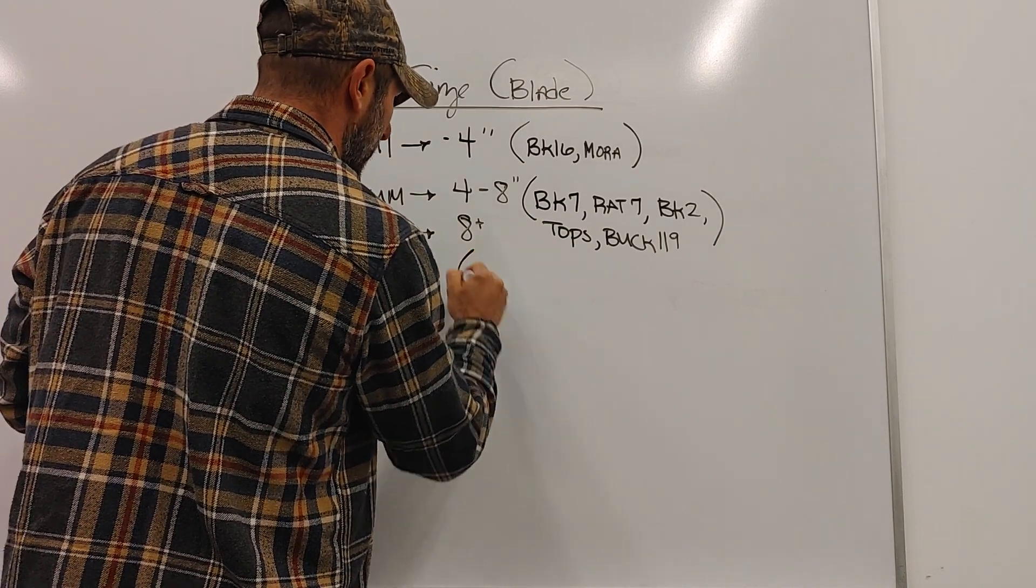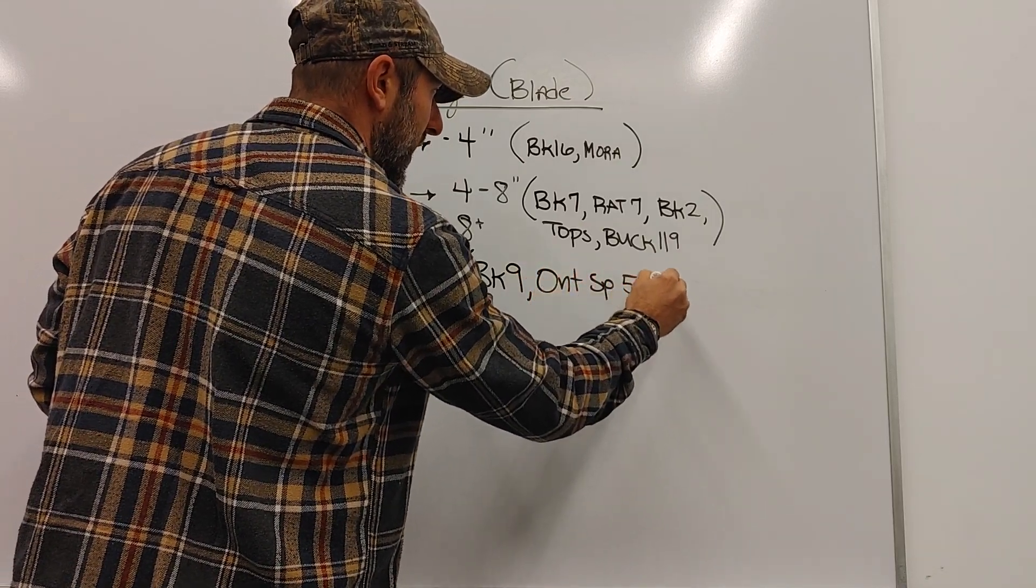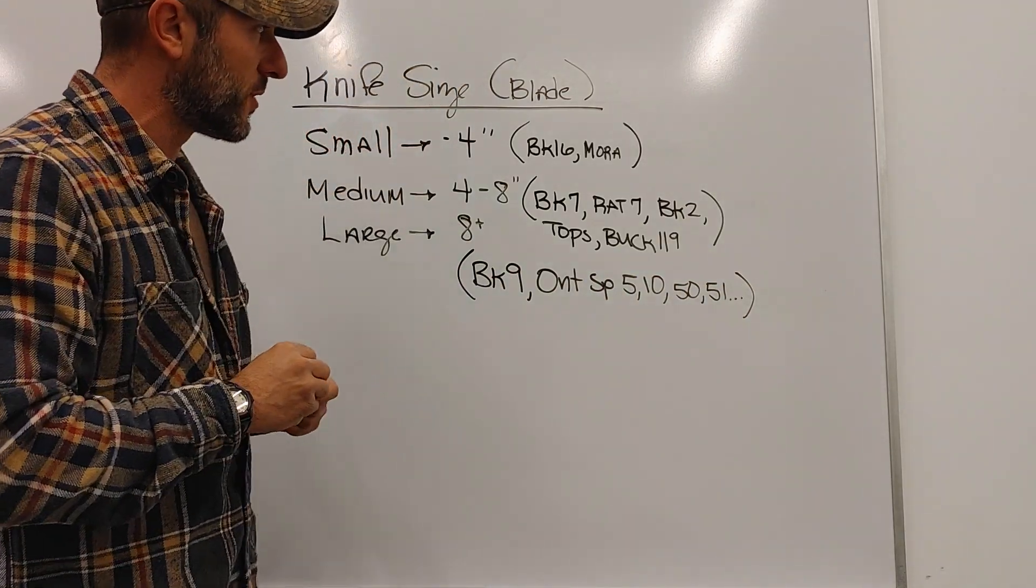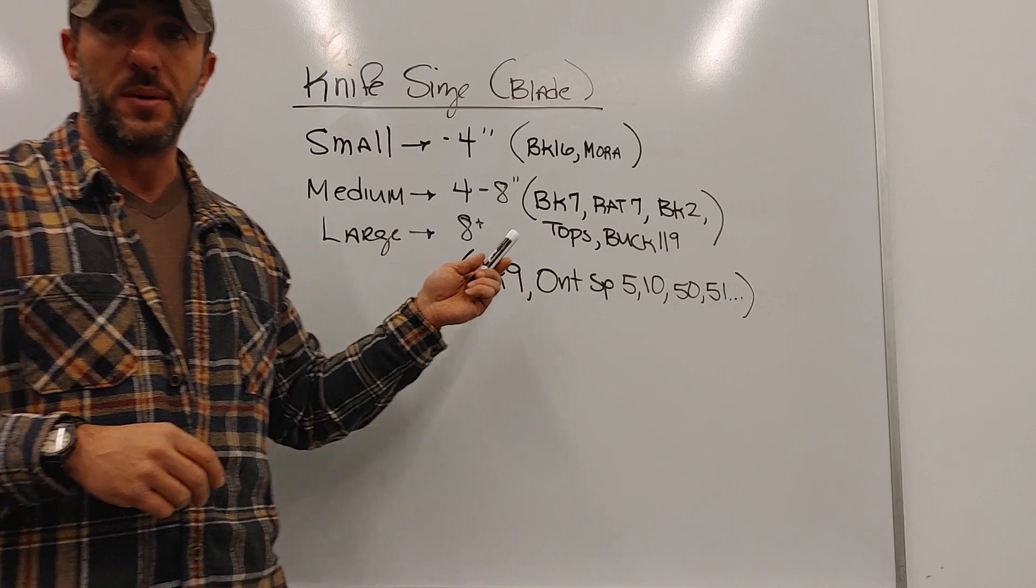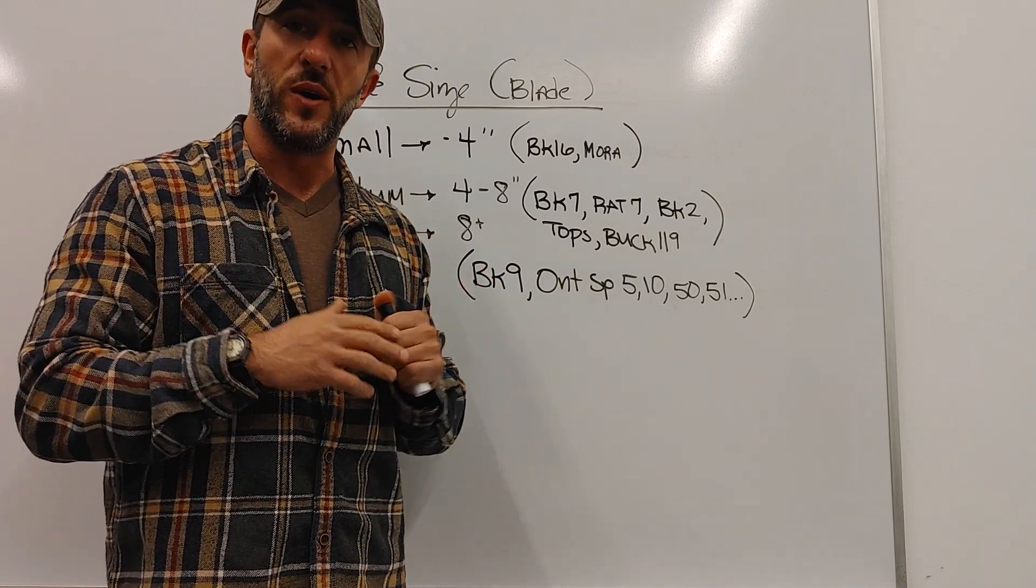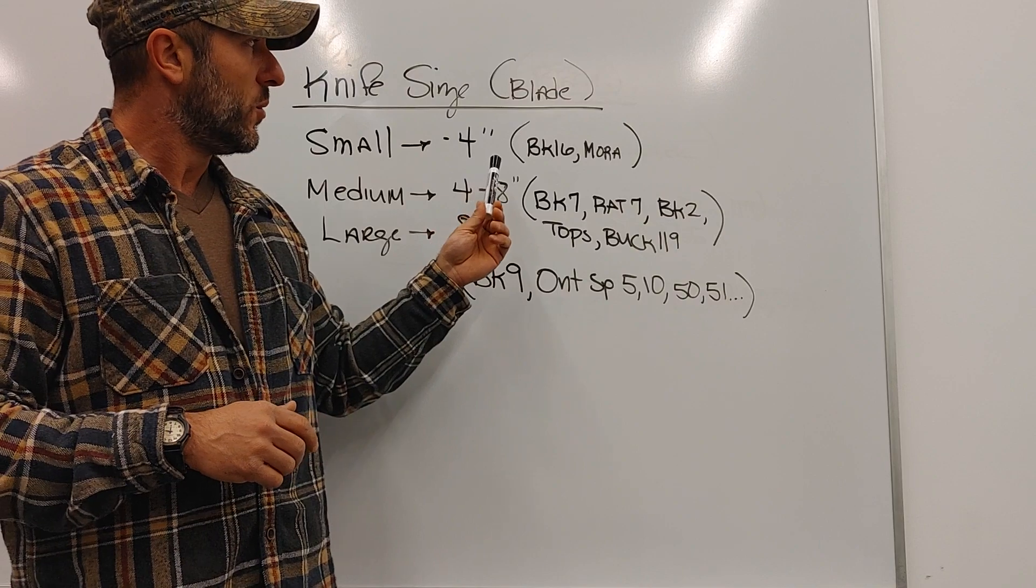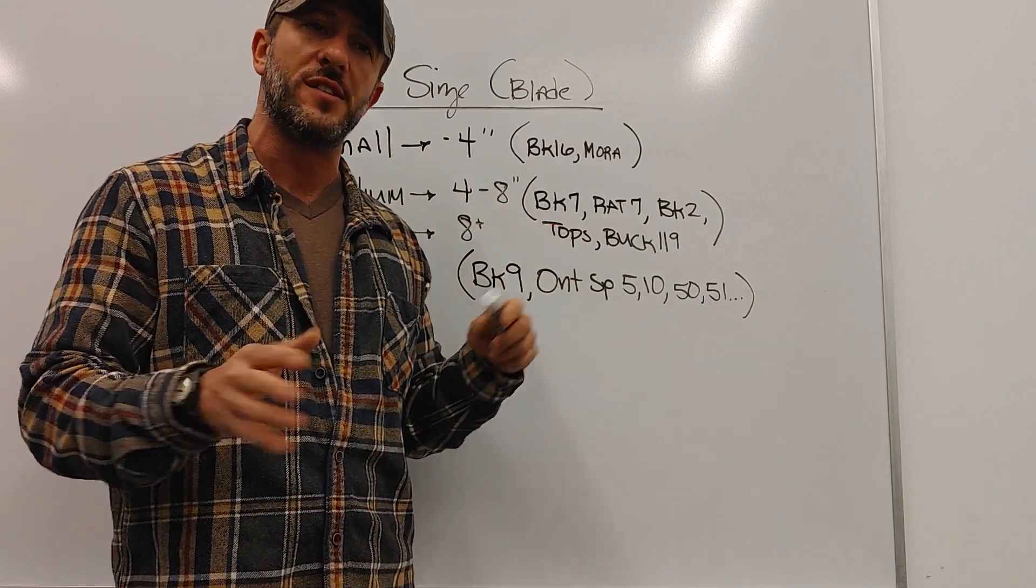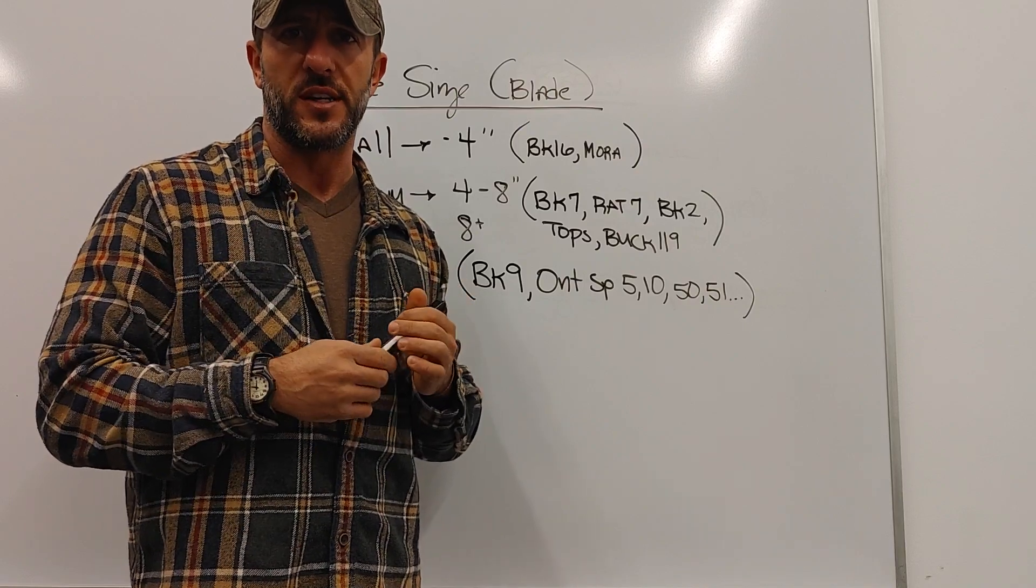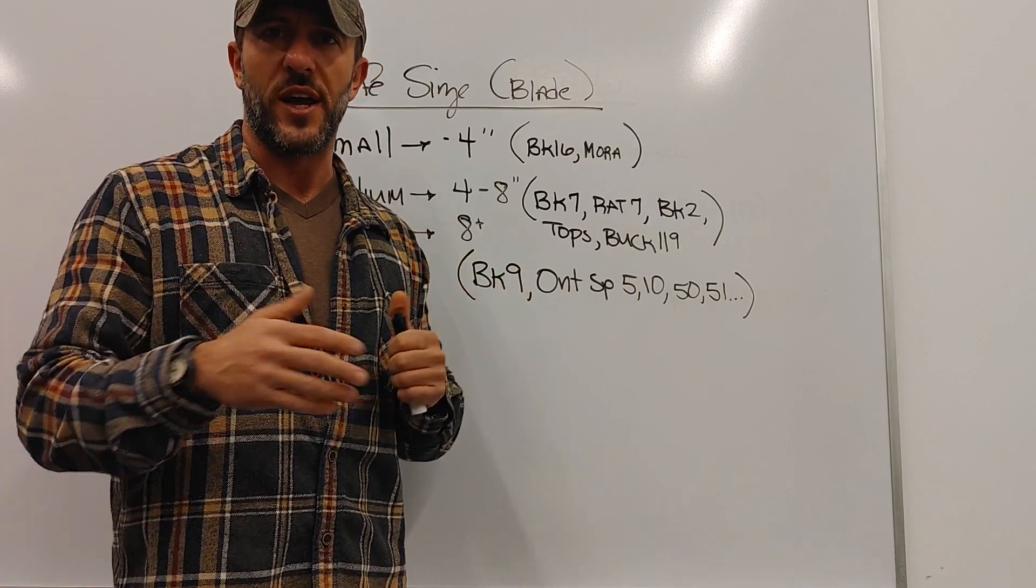Let's look at the large knife. Staying true to the Becker series, the BK9. Ontario has the SP5, 1050, 51, etc. Tops has a bunch of these, Cold Steel has a bunch, Bark River has a bunch. Now we don't need a baton at all to chop, and now we are able to fell things in knee-deep snow in situations where we can't just forage for wood on the ground. Do not try this just once and say this knife will work for me. Try it a multitude of times under a multitude of weather conditions in different terrains, and then base your decision.